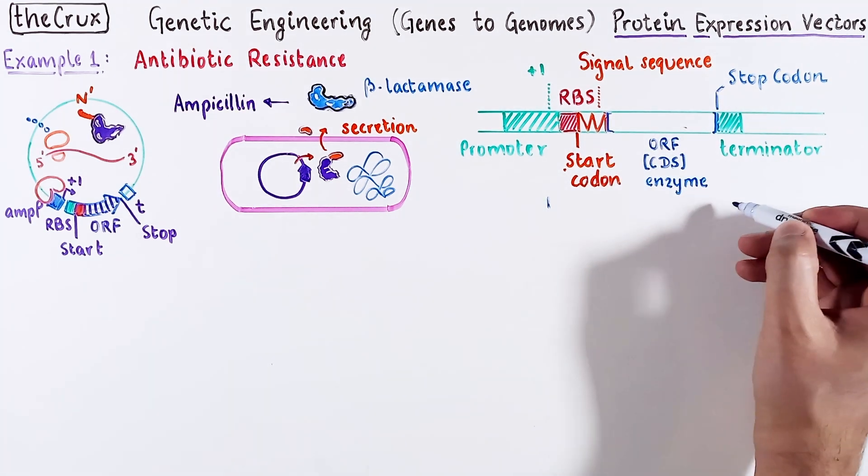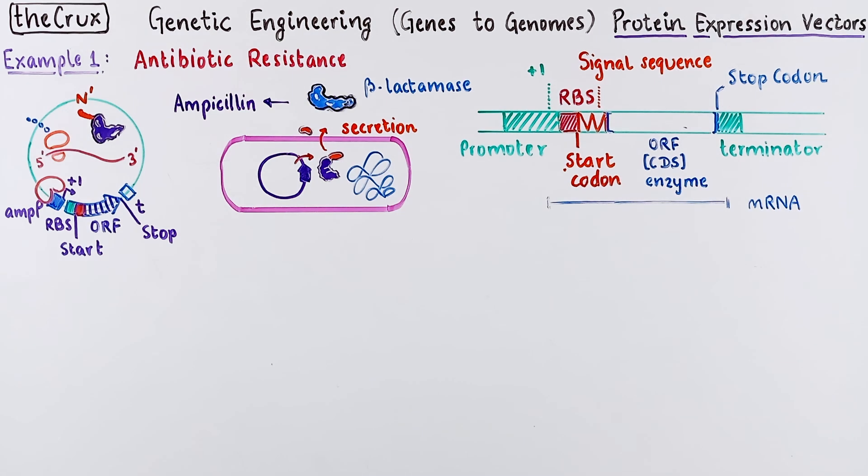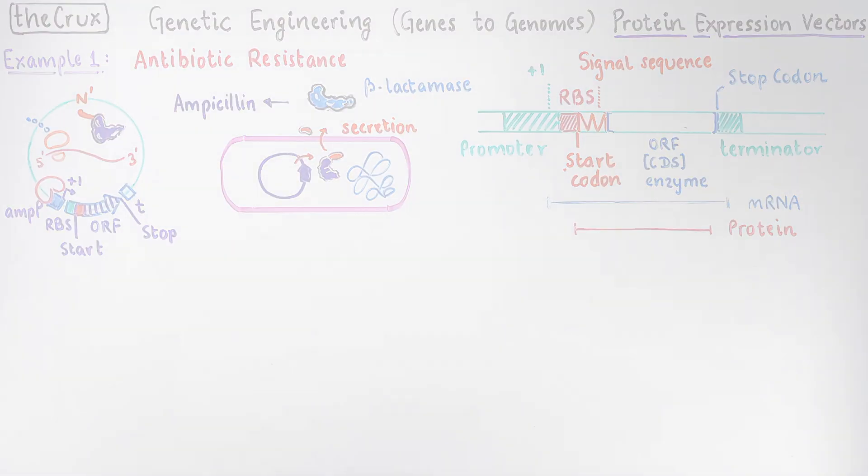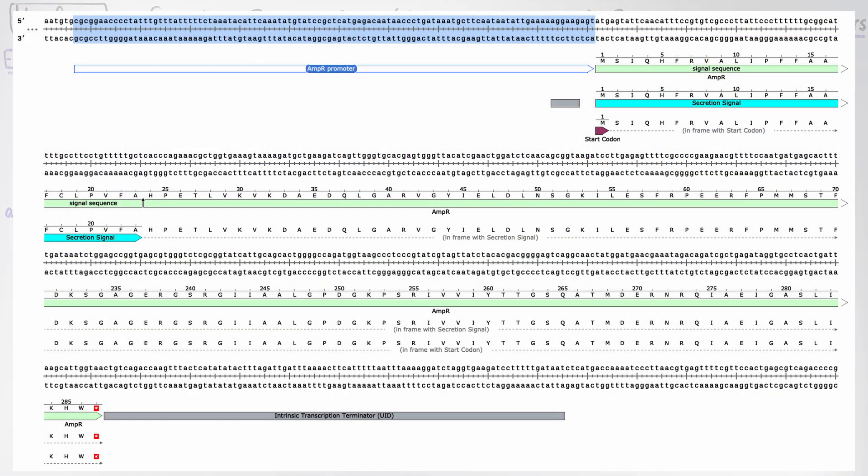Just to be explicit, the mRNA is made starting from the TSS till the termination point. The protein is made using a sub-portion of the mRNA. Here is an annotated snapshot of the AMP resistance from PUC19. There is the AMP promoter, a ribosome binding site, and an ORF following that, which begins with the secretion signal going into beta-lactamase. And it ends with a stop codon and a transcription terminator.